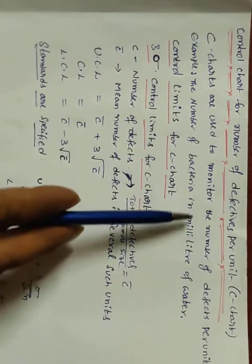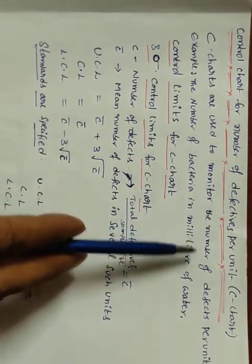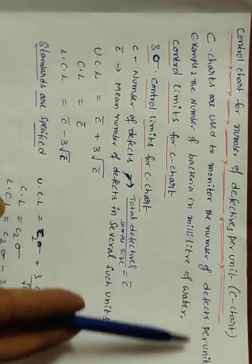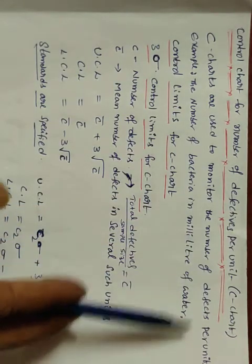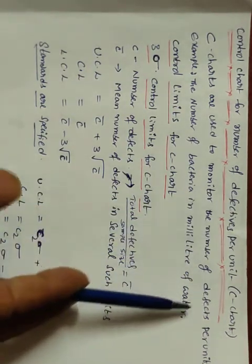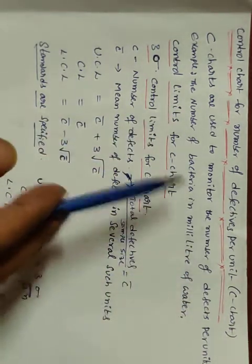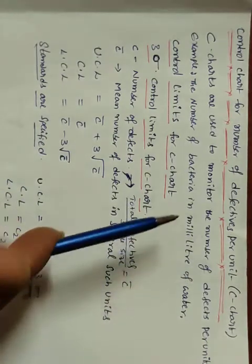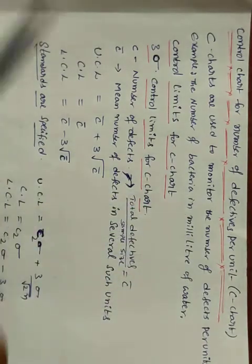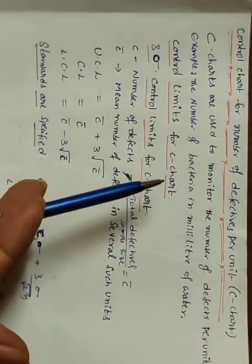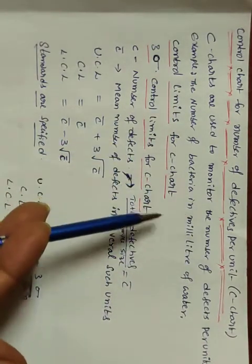C charts are used to monitor the number of defectives per unit. The question is: is the number of defectives per unit under control or out of control? We use a C chart for that purpose.